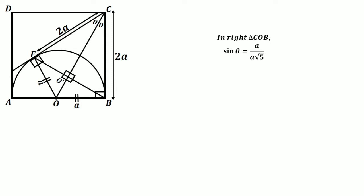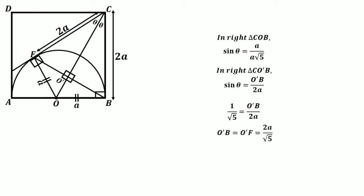Now in right triangle CO'B, sine of theta equals O'B divided by 2A. Equating both values of sine of theta: 1 divided by root 5 equals O'B divided by 2A. We know that O'B equals O'F by congruency, so O'B equals O'F equals 2A divided by root 5.